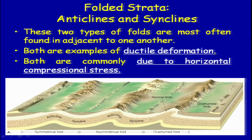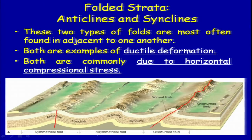Suppose you are having a fold where the limbs are not at equal angles — you connect the hinge line and the axial plane, and here the axial plane will be somewhat inclined rather than vertical. This becomes what we call an overturned fold or an asymmetrical anticline with some amount of inclination. You will be able to gather this only by satellite data interpretation — you cannot always see the cross-section directly.